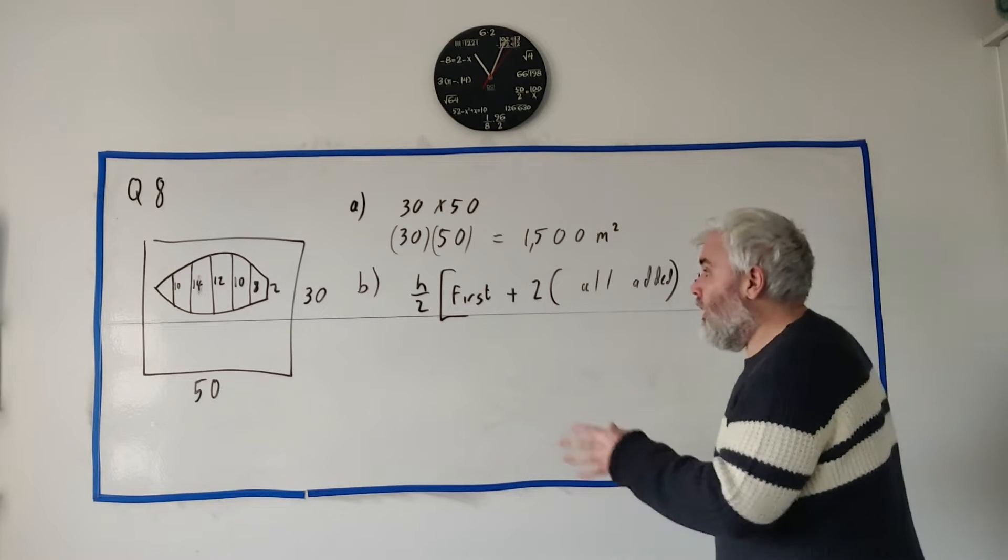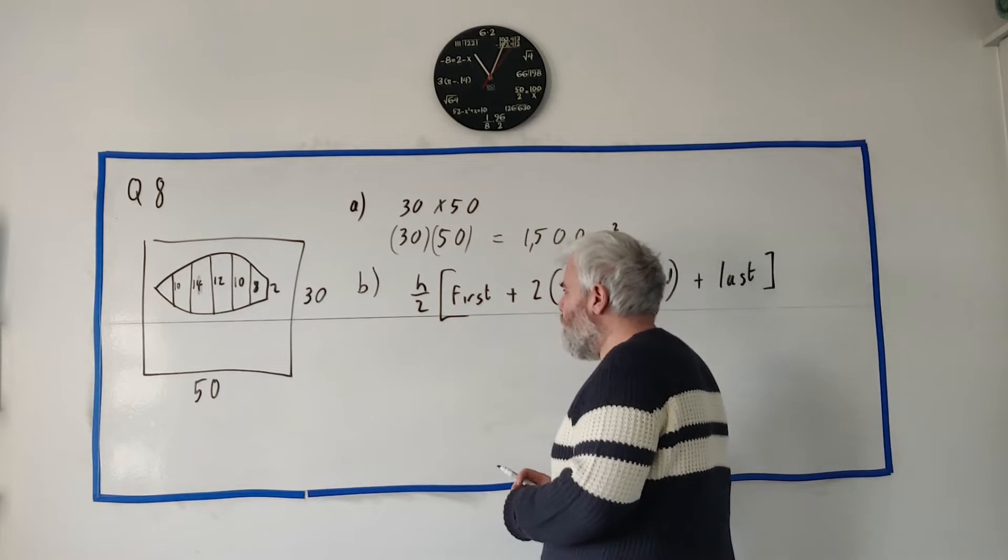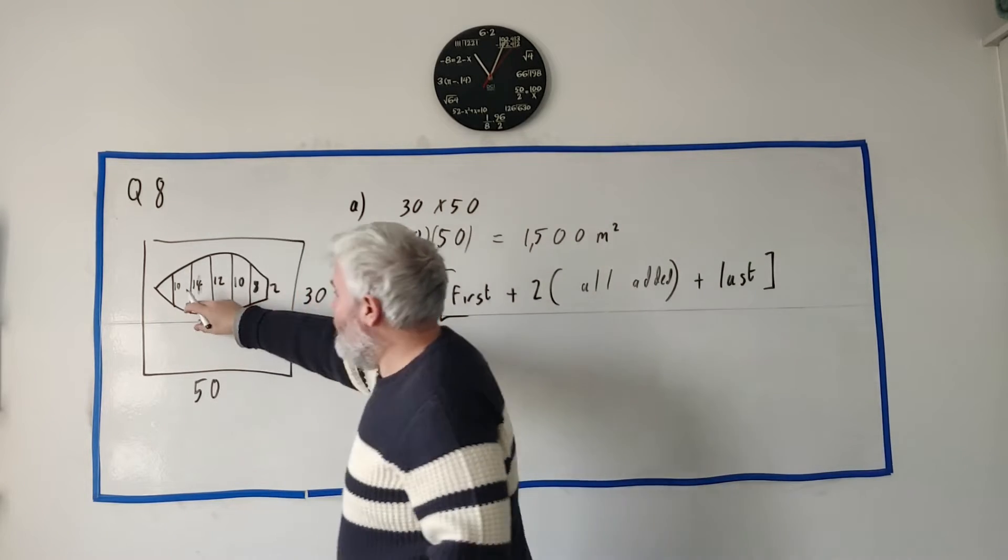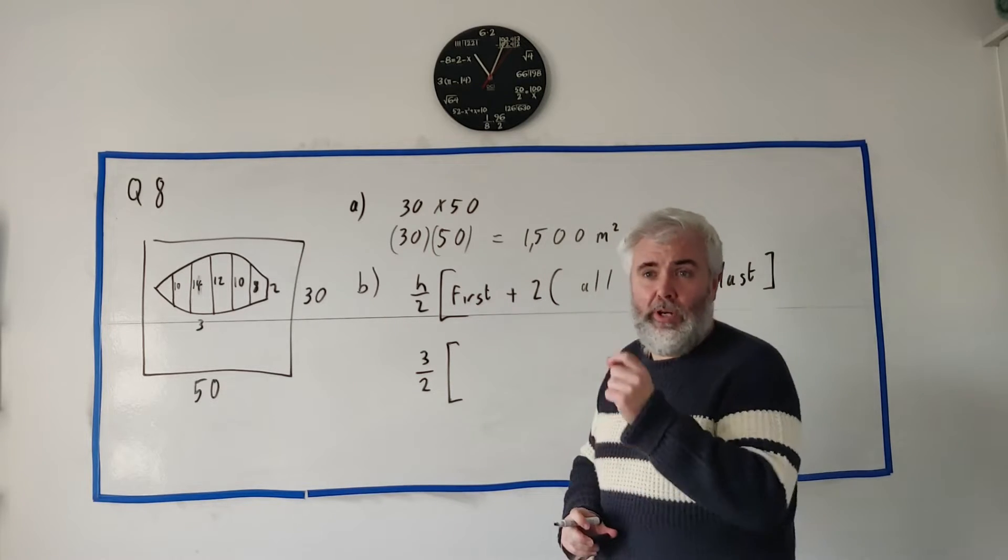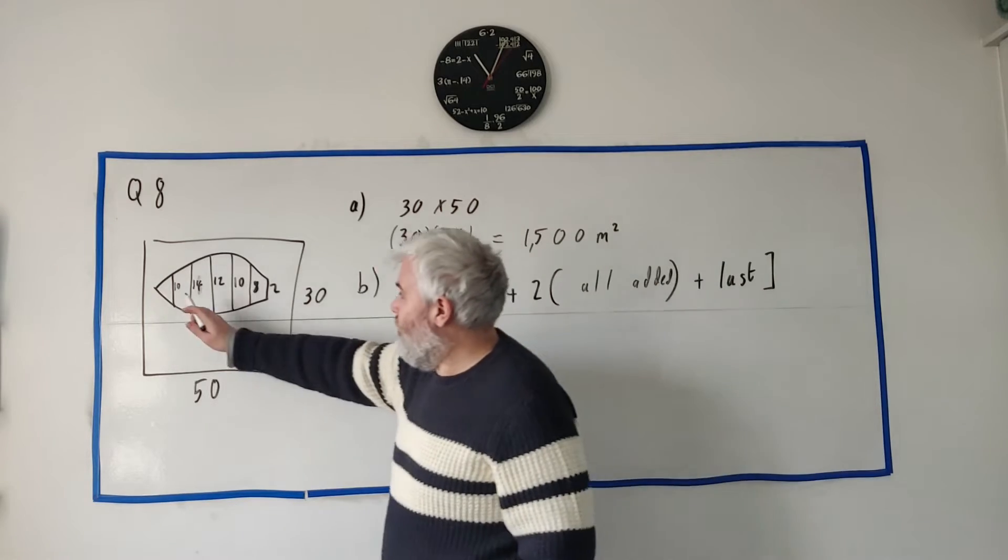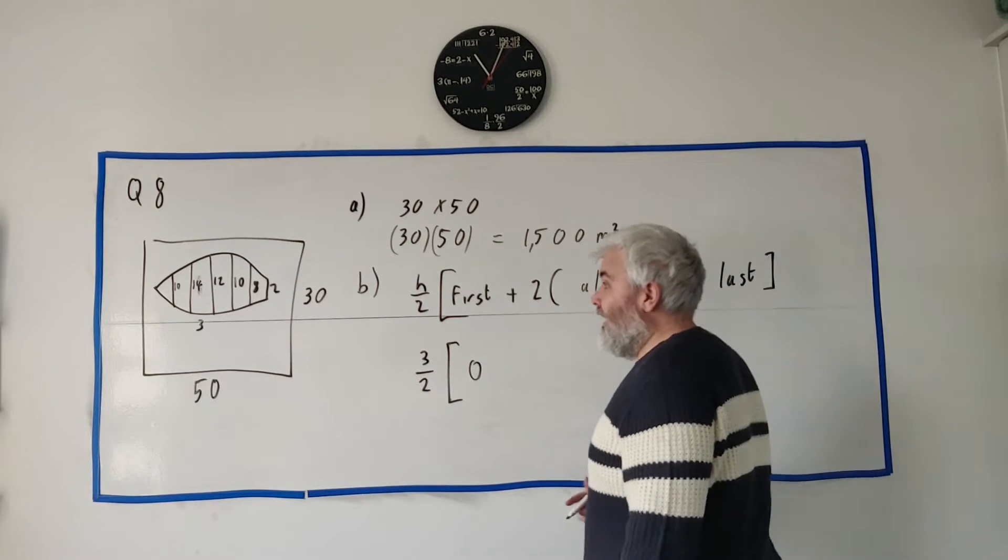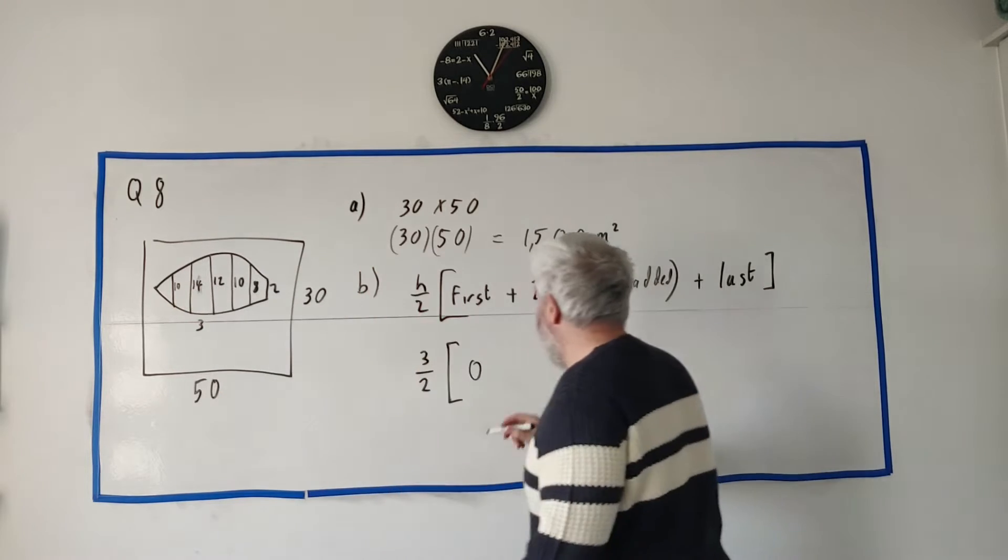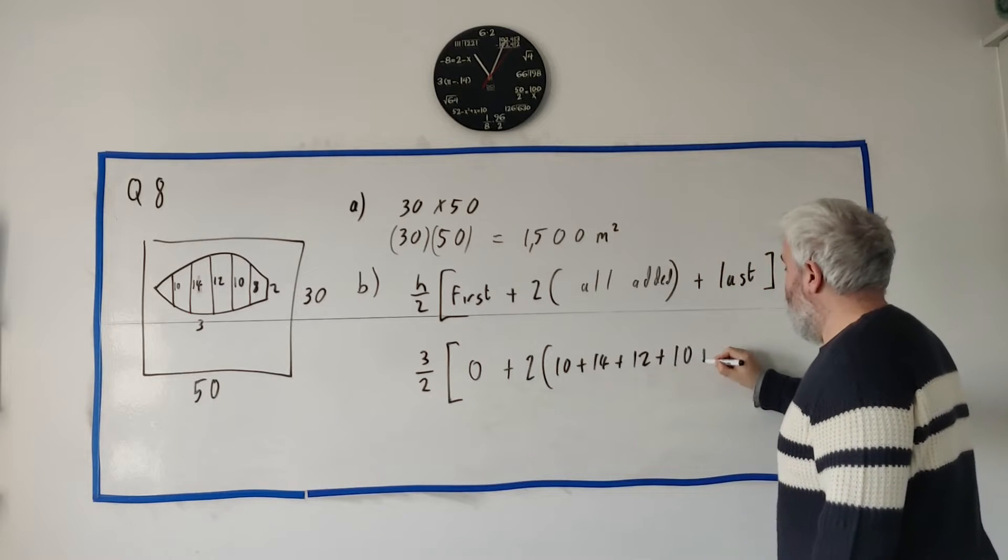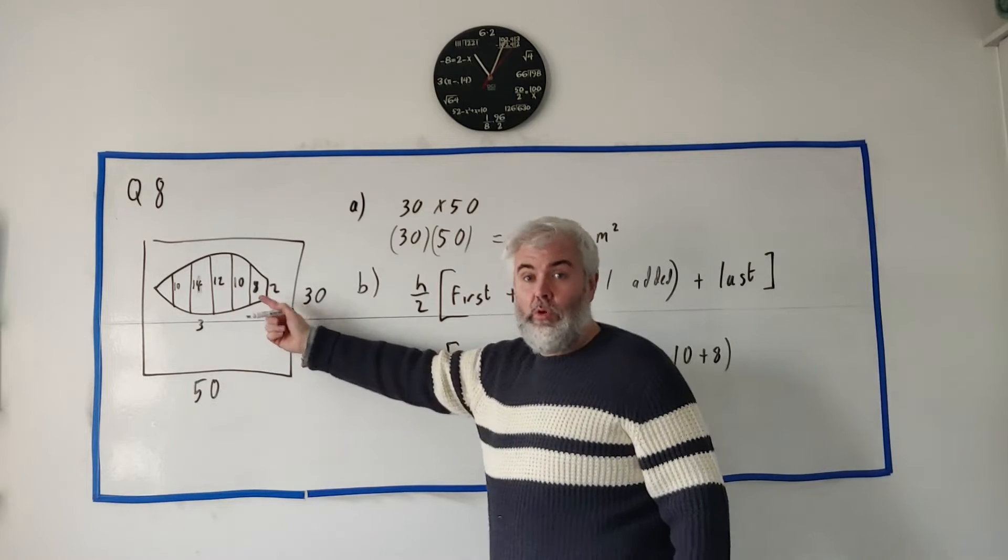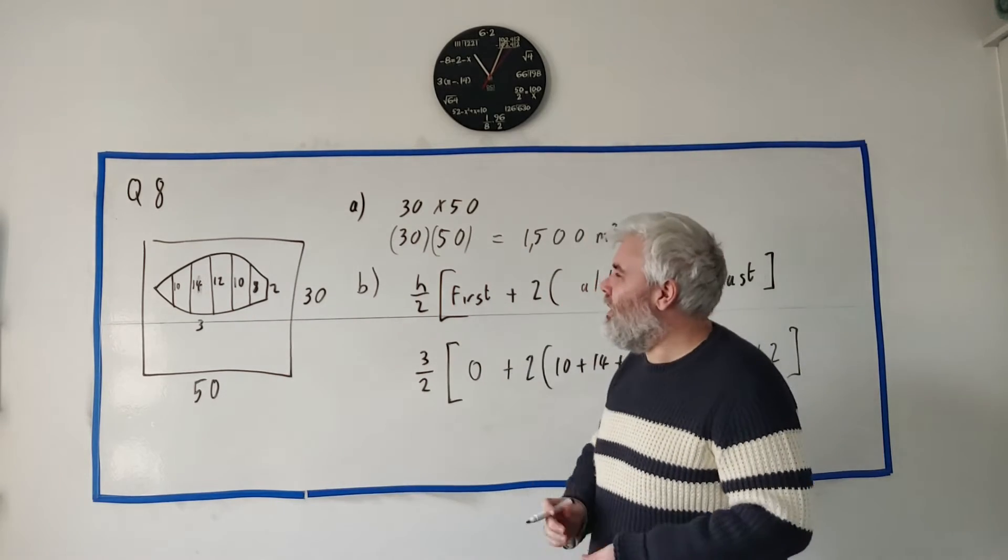Let's write that out with a real example here. The first thing is h, the width of all these lines is 3, so we know that number: 3 over 2. The next is the first number. This is probably where a lot of students made a mistake - the very first number isn't written, it's zero. The height at the start is actually zero. So the first number is zero, then we have 2 multiplied by 10 plus 14 plus 12 plus 10 plus 8, but not the last number which is 2.